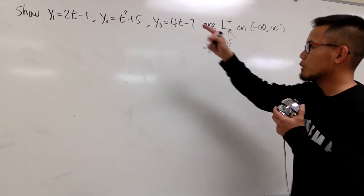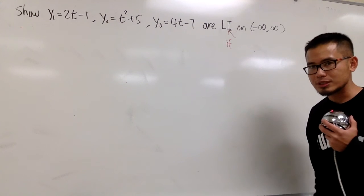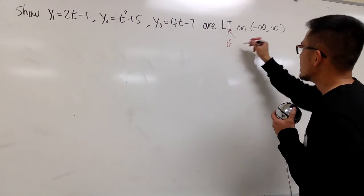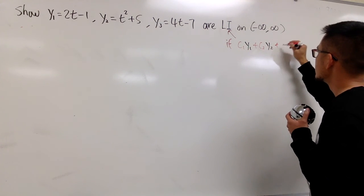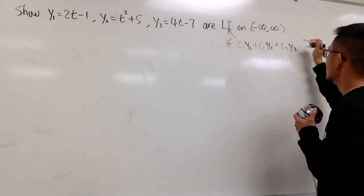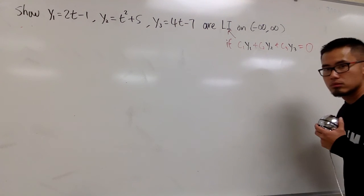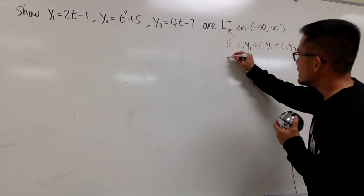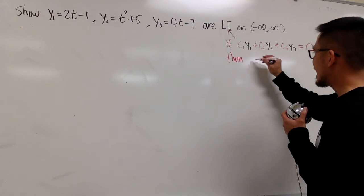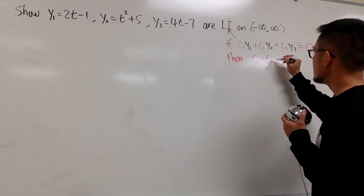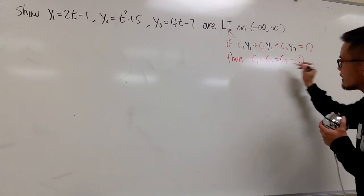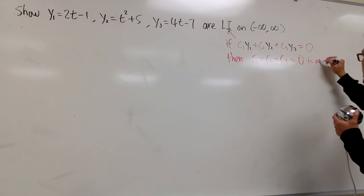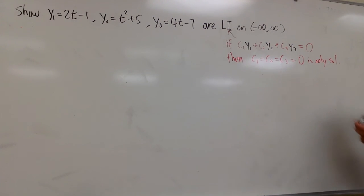If we have c1, c2, c3 multiplying with y1, y2, y3 correspondingly, if we set this up, c1 y1 plus c2 y2 plus c3 y3, and we make this equal to 0, then you must show that c1 is equal to c2, is equal to c3, which they are all 0. This right here is the only solution.